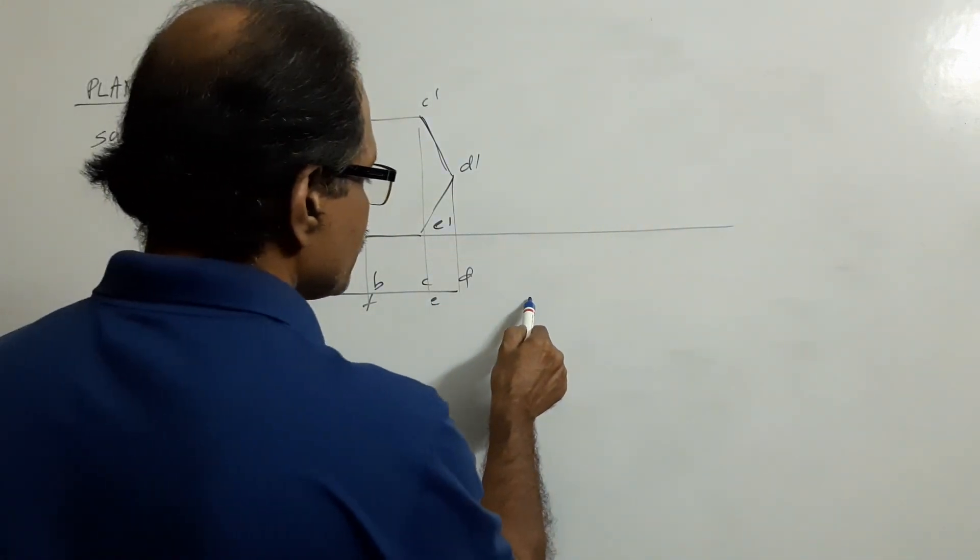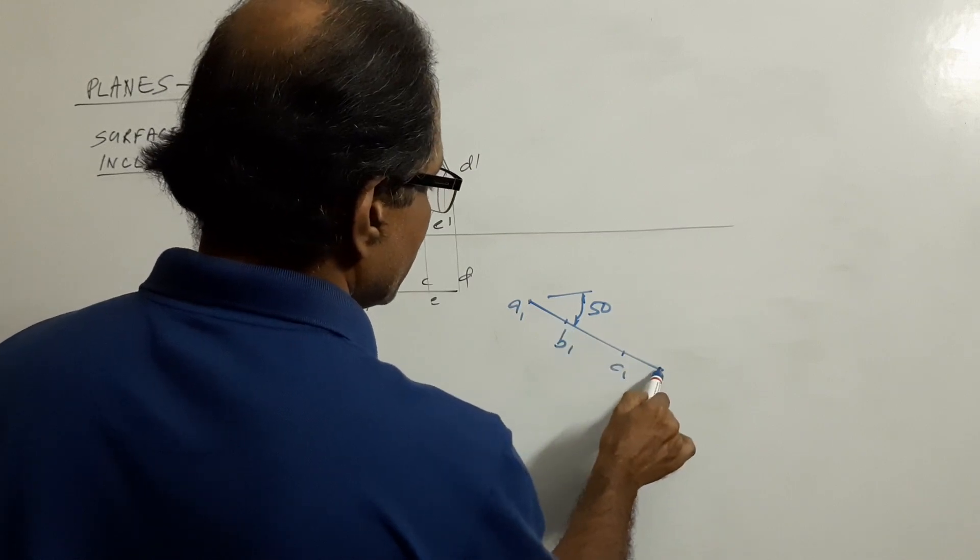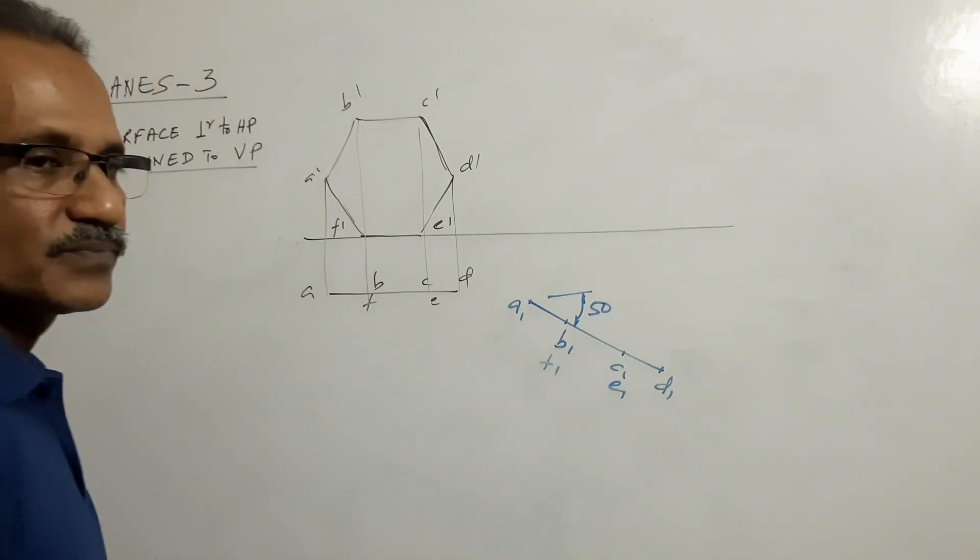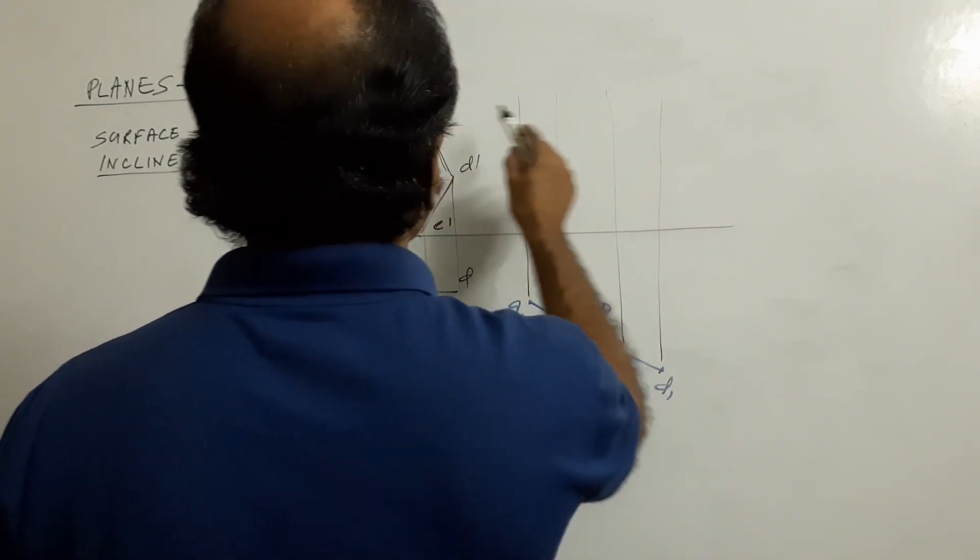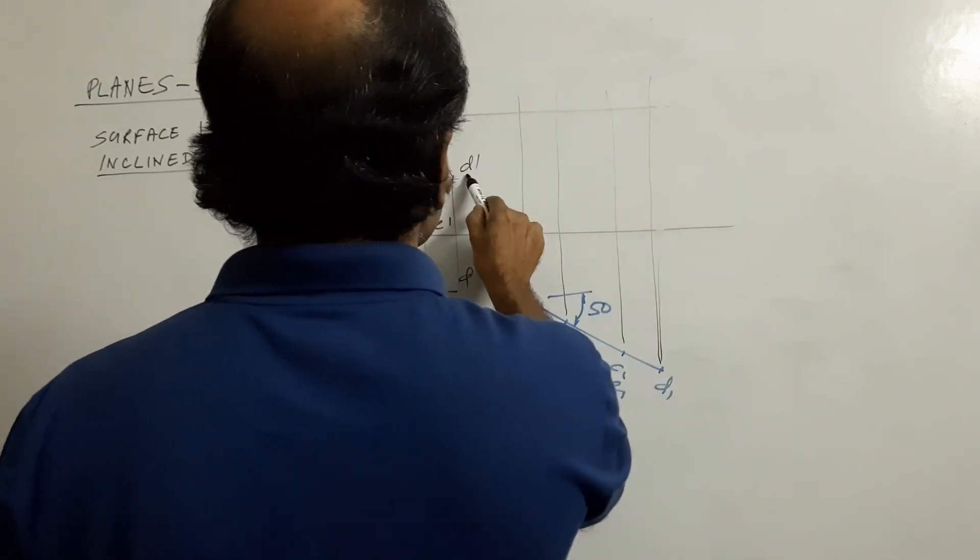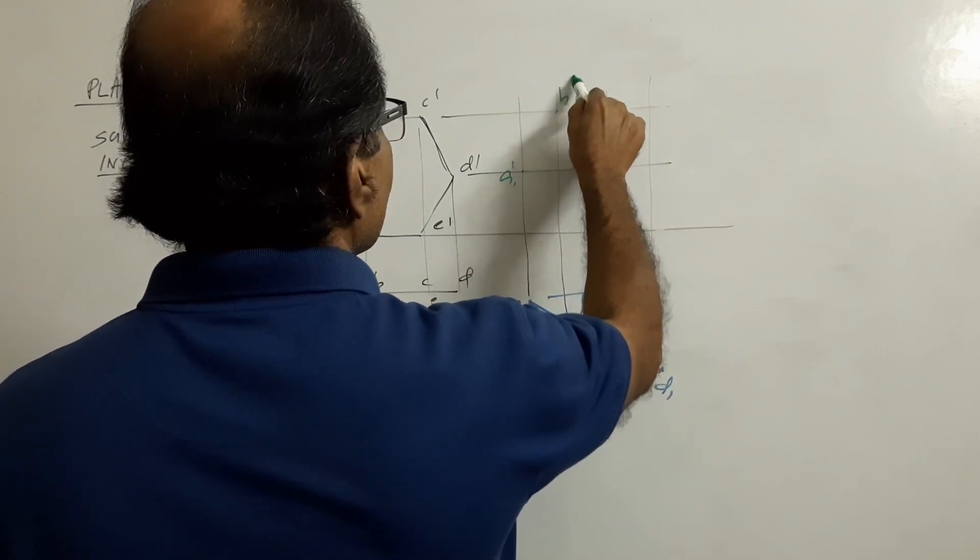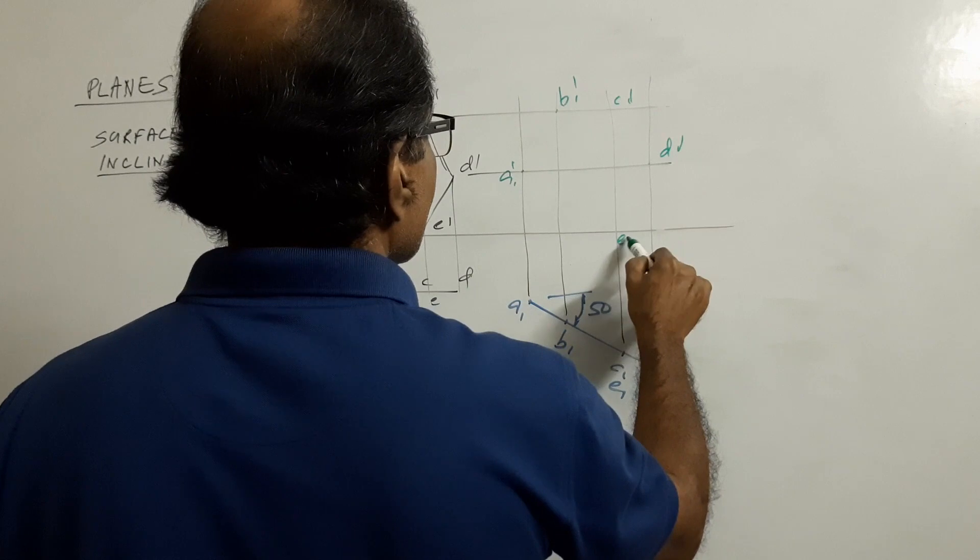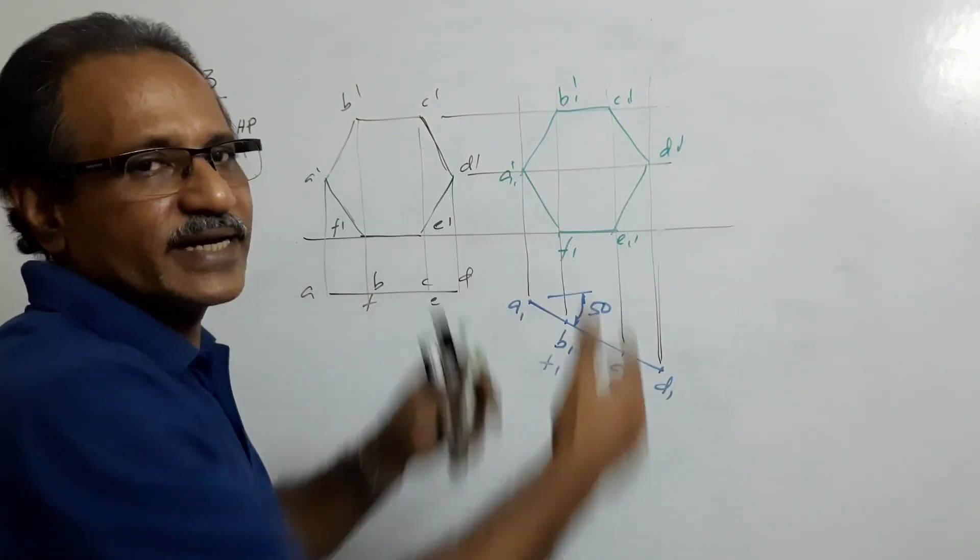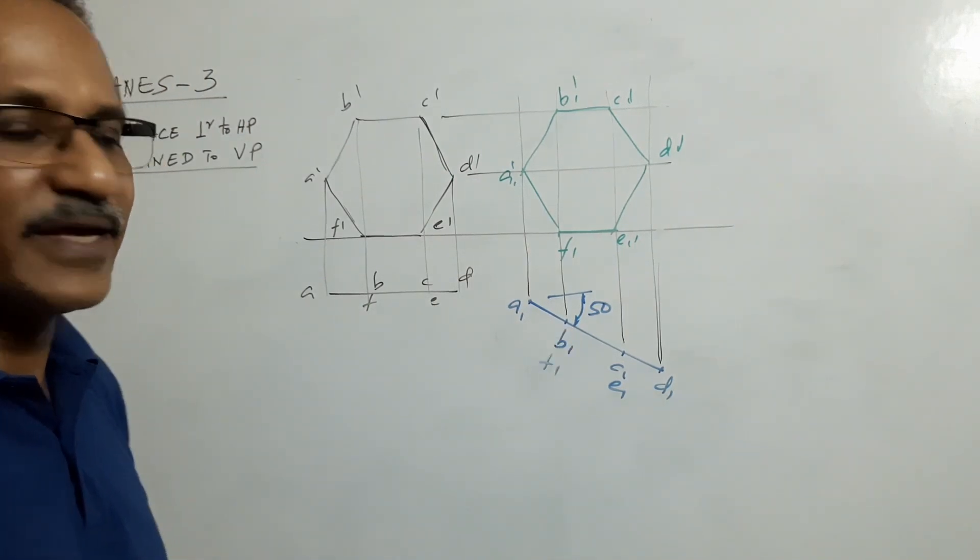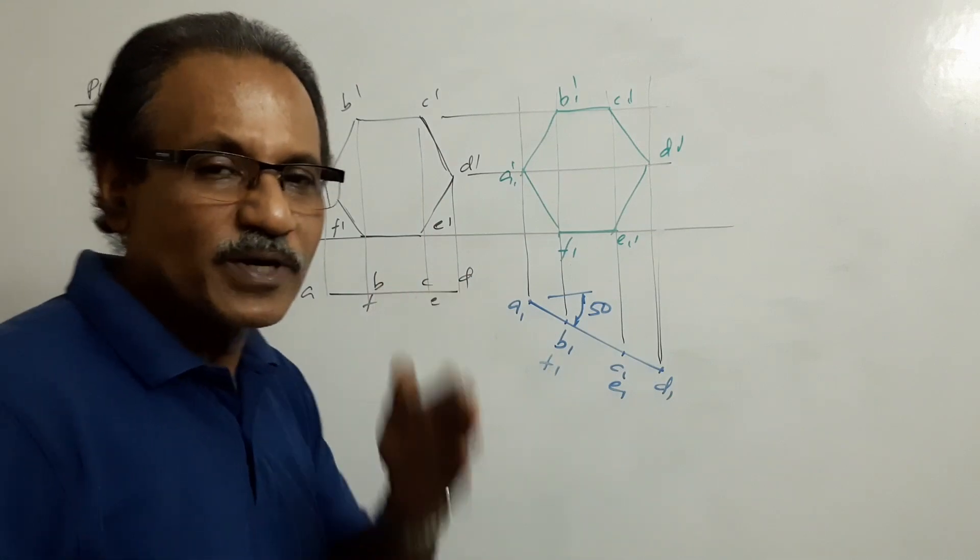Redraw the plan. A1, B1, C1, D1, E1, F1. Draw vertical projectors up. A1, B1, C1, D1, E1, F1, connect. What do you get? You get a compressed hexagon. My angle is too less. This is around 35 to 40, it should have been 50. But this is the concept. Here it is resting on HP itself, but the surface is perpendicular to HP and inclined to VP. Surface is perpendicular to HP and inclined here.